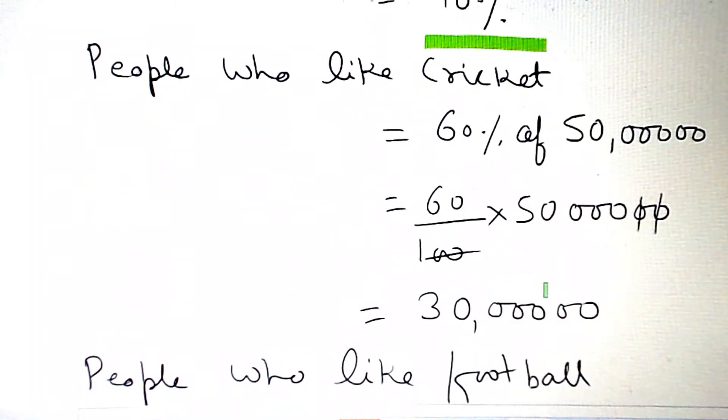People who like cricket equals 60% of the total. The total is 50 lakh, so we calculate 60% of 50 lakh.